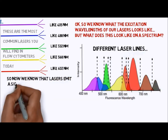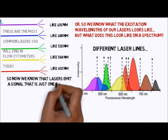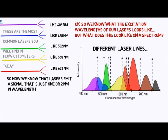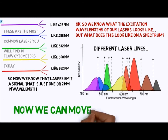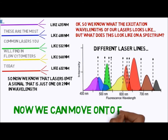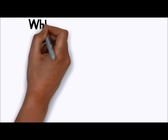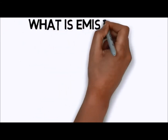The lasers we use are nicely sequenced along this spectral chart. We know we can use several lasers on a system to excite different fluorochromes — that's the front end of the flow cytometer, the excitation side. But what about the emission side?